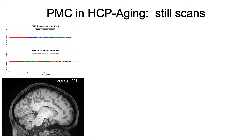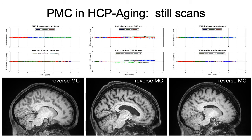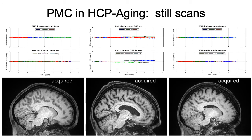Here's an example of a scan with very little motion. We see the acquired and the reverse motion corrected image are very similar, and the image quality is good. A couple more examples show nice image quality in these 0.8mm isotropic resolution scans.